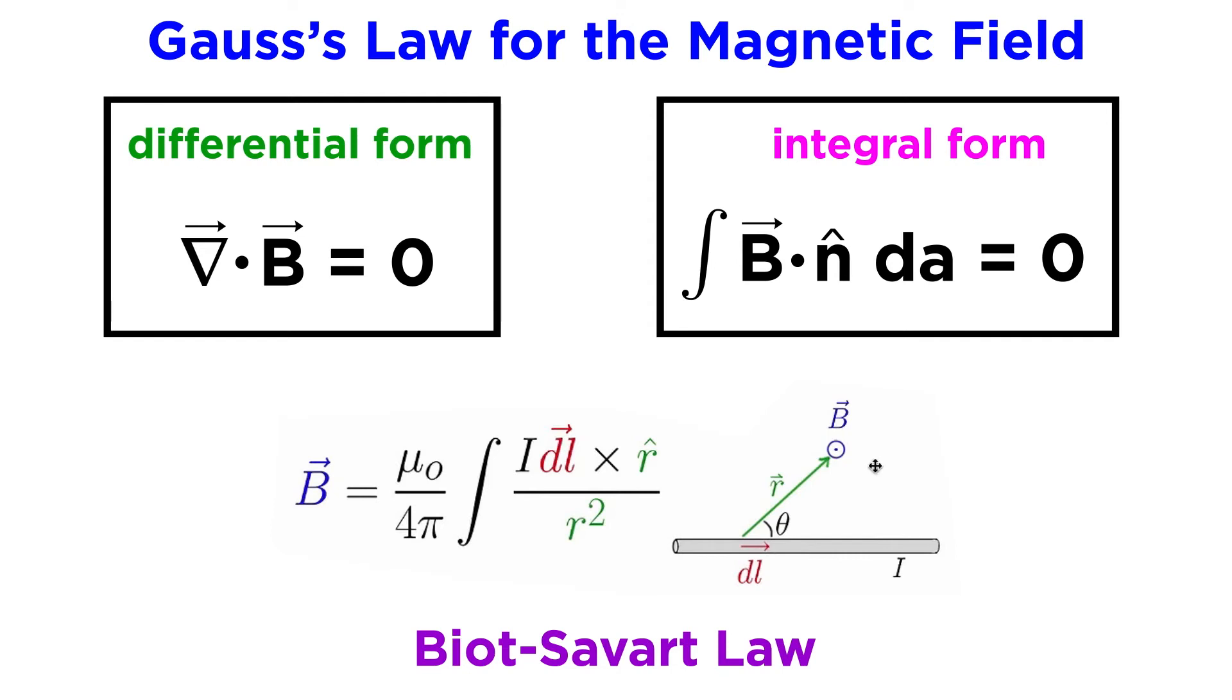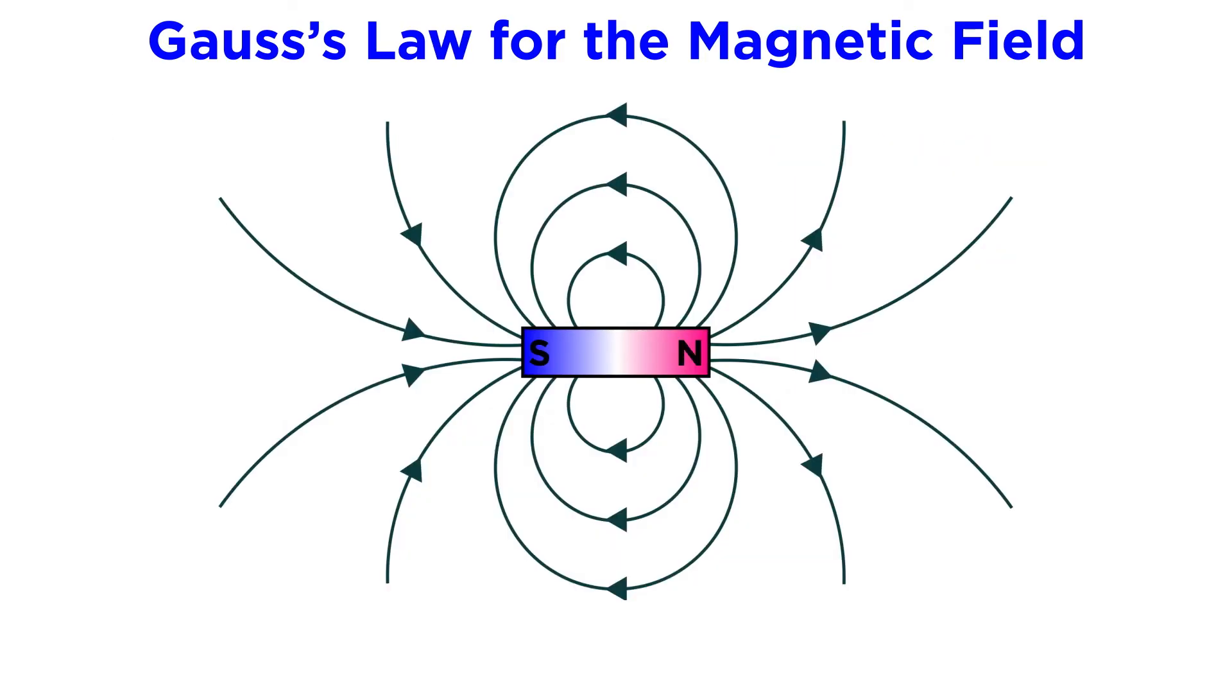For example, if you know the magnetic field within a part of a complex shape, Gauss's law can be used to determine the remaining field. On principle, Gauss's law for the magnetic field displays the simplest facts about the magnetic field.